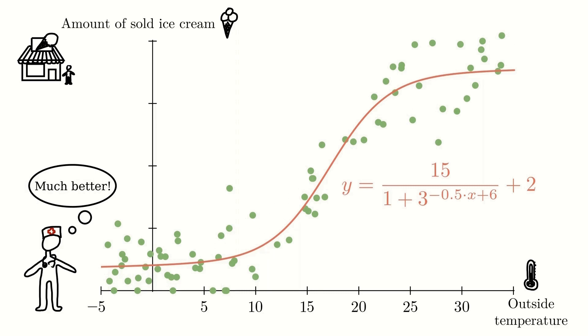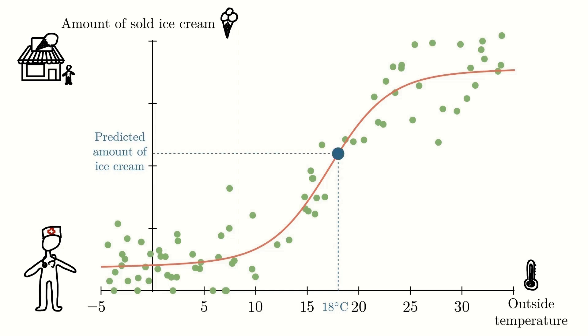Fitting a line to the data in this way is useful because now we can use this line to predict how much ice cream will be sold for any outside temperature. So, if the weather forecast for tomorrow says 18 degrees, for example, we can now predict how much ice cream will be sold tomorrow.